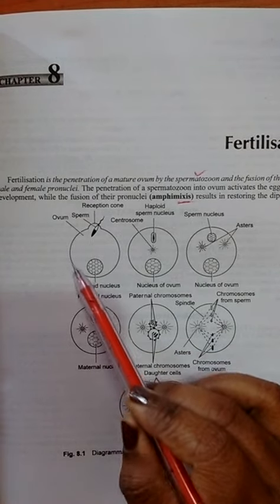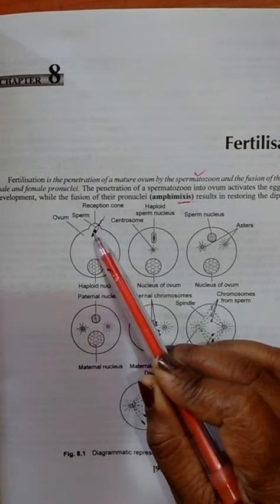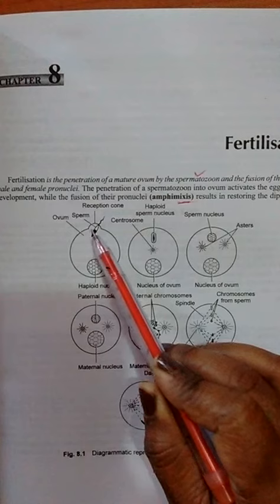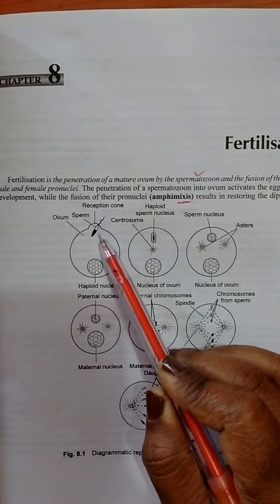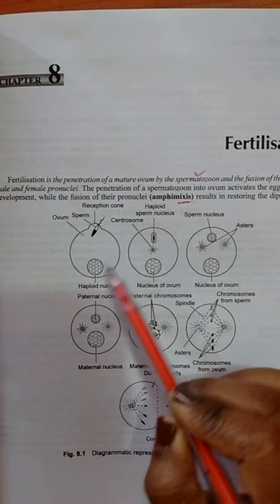This is the haploid nucleus of the ovum and this is the sperm. The sperm is received in a reception cone. This cone is found to receive the sperm for fertilization, which activates the ovum for fertilization.